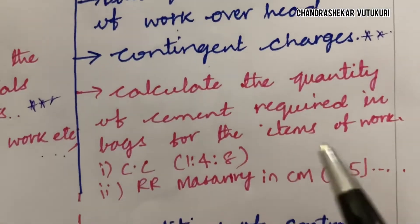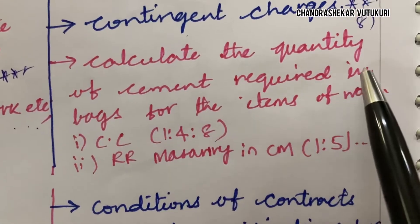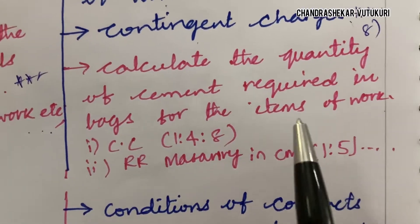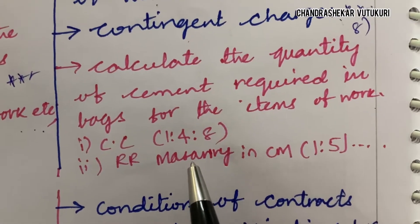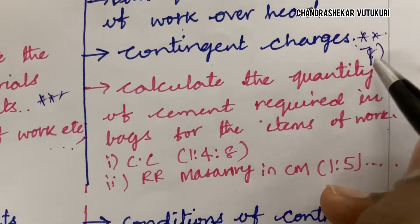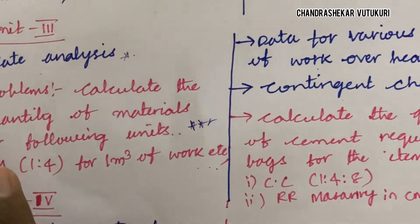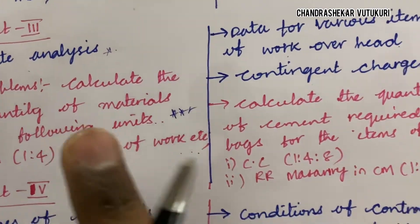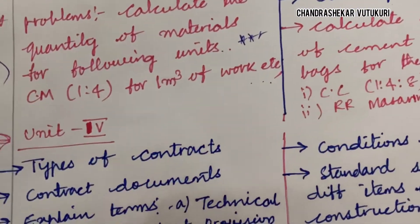The seventh or eighth question asks you to calculate the quantity of cement required in bags for items of work — for example, CC 1:4:8 and MCM 1:5. This comes from Unit 3. Questions 6 or 7 are either/or — dear students, you must attempt only one of them. You are not supposed to attempt both 6 and 7, as that would waste your three hours of exam time.